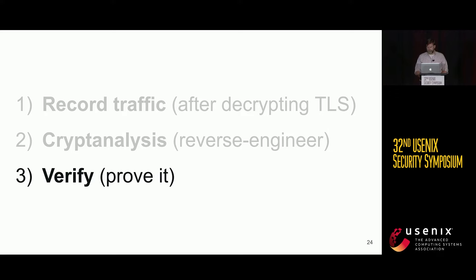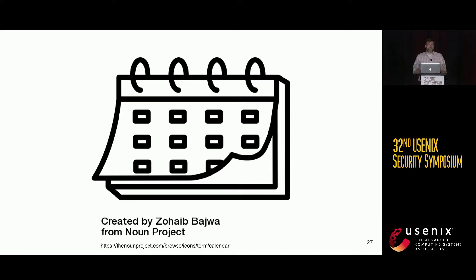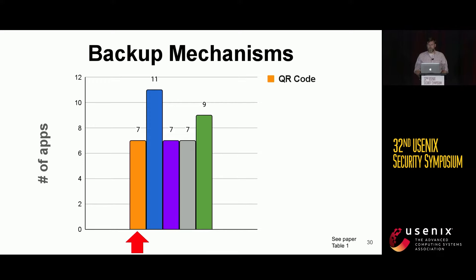I'll highlight some key findings. I'm going to be speaking in the past tense — not only because the research is complete, but we started over two years ago and completed it over a year ago. New versions of apps certainly represent a changing landscape. The first backup mechanism we found is the ability to manually transfer TOTP secrets from one device to another using QR codes. This is really secure because it doesn't utilize the network at all, but it presents a usability challenge because you can easily forget to do it.